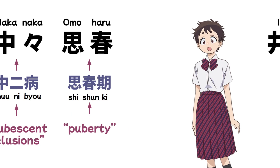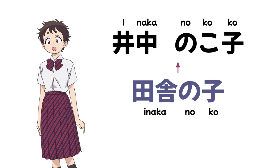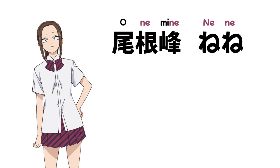Next up is Inaka Nokoko. Her name sounds like the phrase 'Inakonoko,' which means 'country girl.' You can tell from her exaggerated accent that she's from the countryside, even though she tries her hardest to keep it a secret.